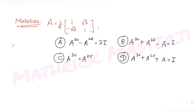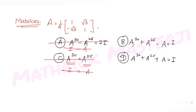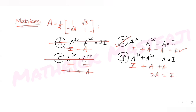Now checking the answer choices with A²⁵ = A and A³⁰ = I: Option C says A³⁰ = A²⁵, i.e., I = A — false. Option A says I - A = 2I — false. Option B says I + A - A = I, which gives I = I — true. Option D says I + A + A = I, i.e., I + 2A = I — false. So the correct answer is option B.